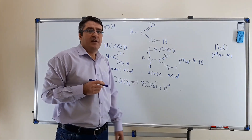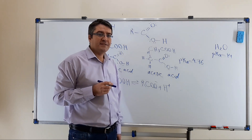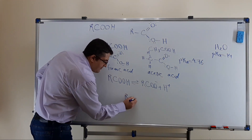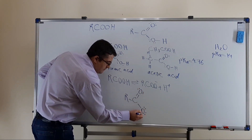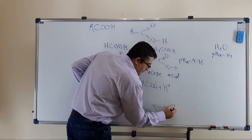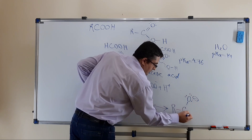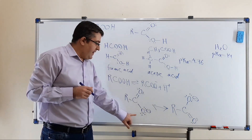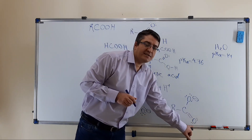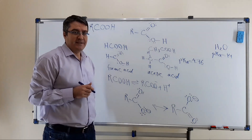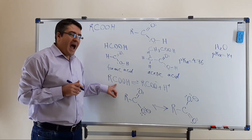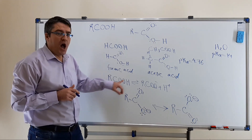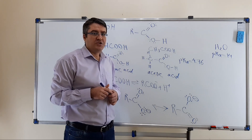This increased acidic strength can be attributed to resonance in the conjugate base of carboxylic acids. Carboxylate anions can have resonance that delocalizes the negative charge between two electronegative oxygen atoms, stabilizing the conjugate base. As a result, acidity of carboxylic acids is strengthened, making them much stronger than other organic oxo acids such as alcohols and phenols.